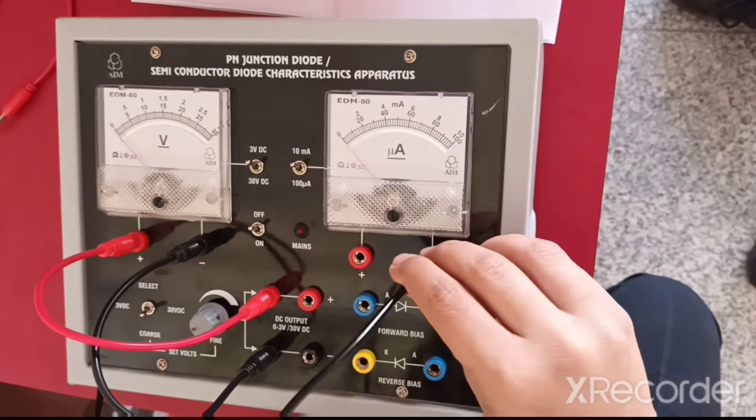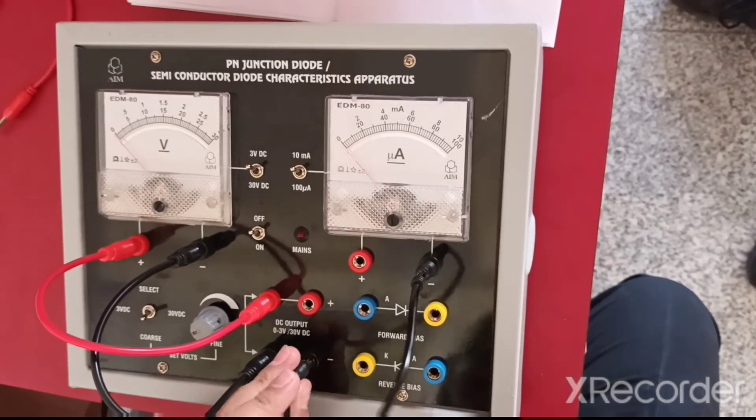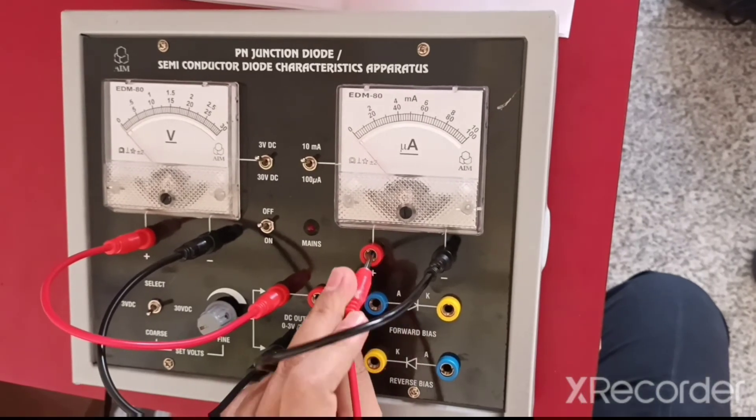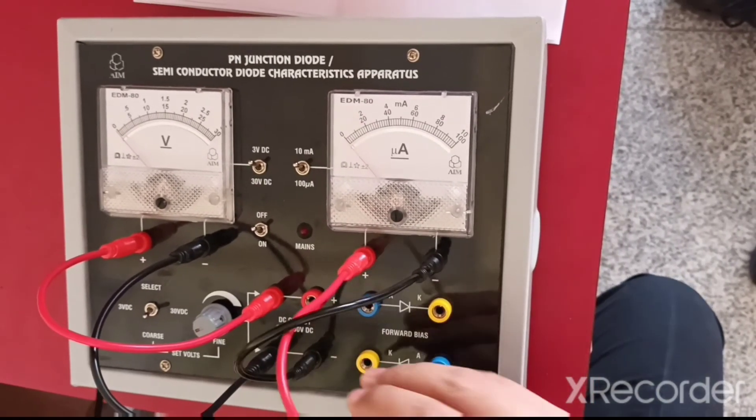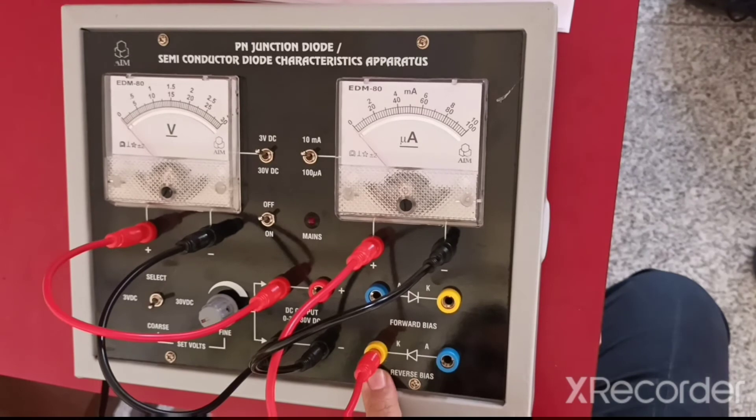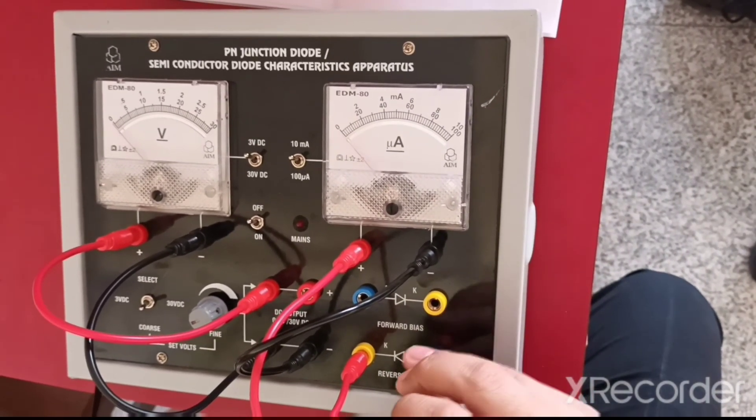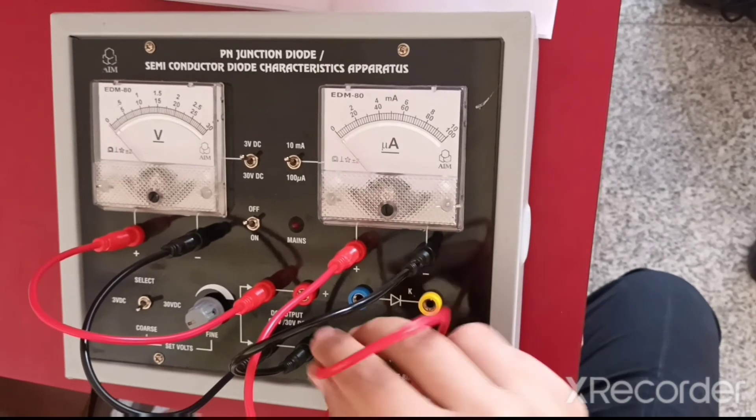Here is negative of the ammeter that is connected to negative of the battery. And the positive of the ammeter, positive to be connected in reverse bias configuration. We connect the positive of the diode to negative terminal for reverse bias.